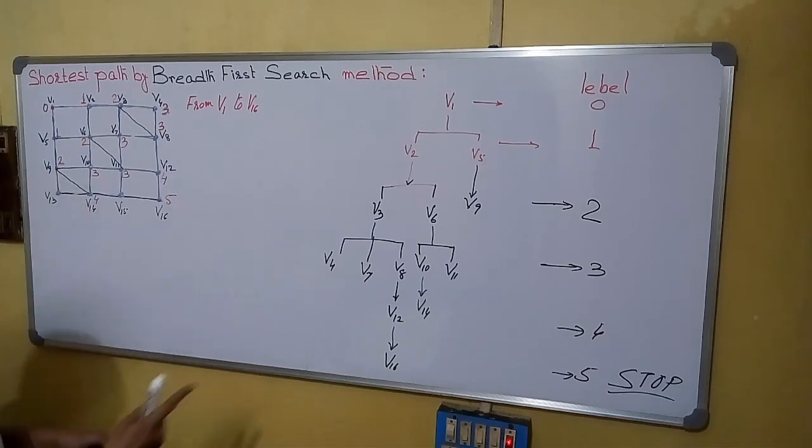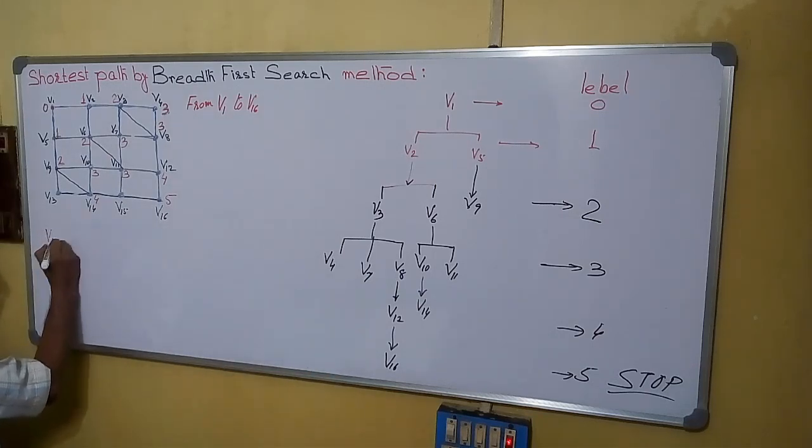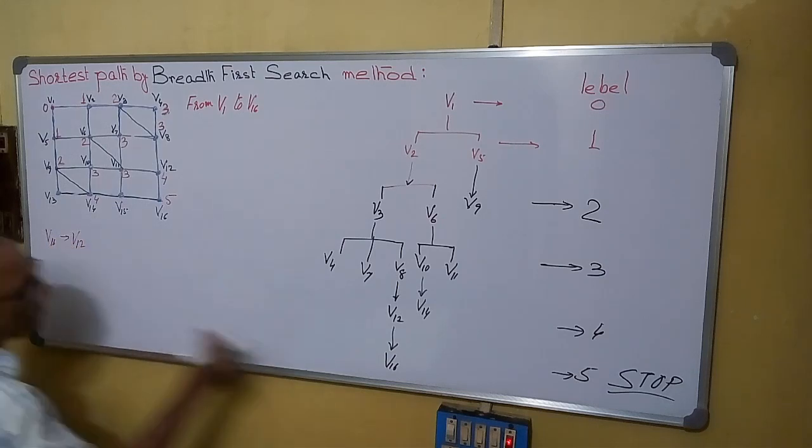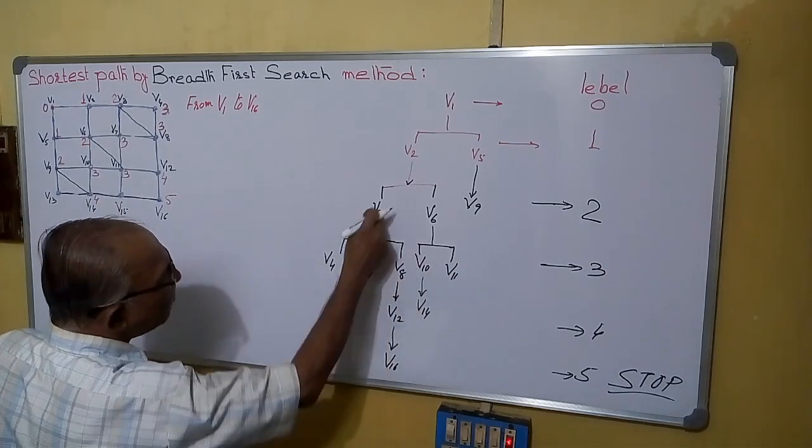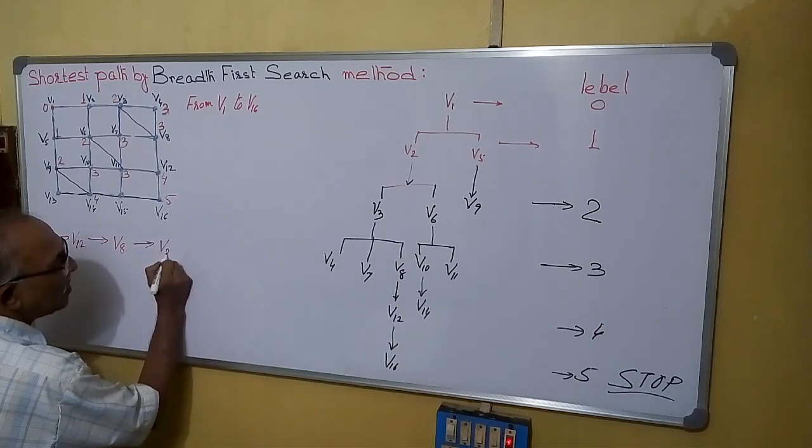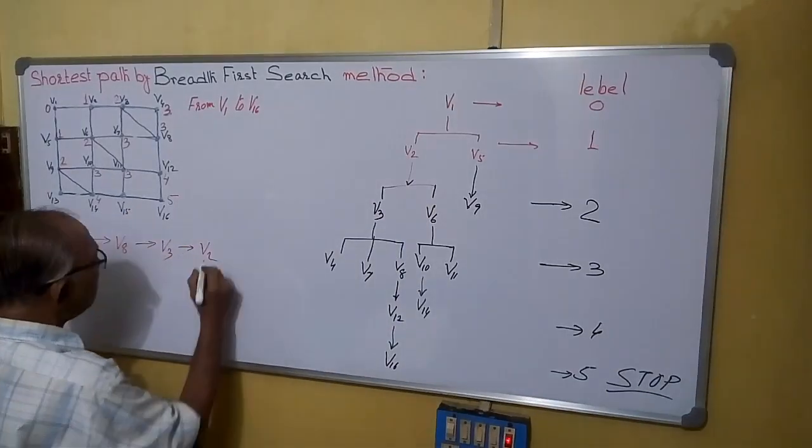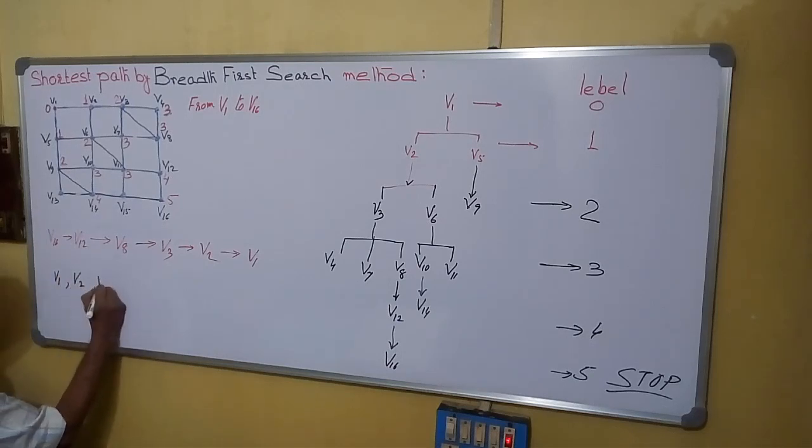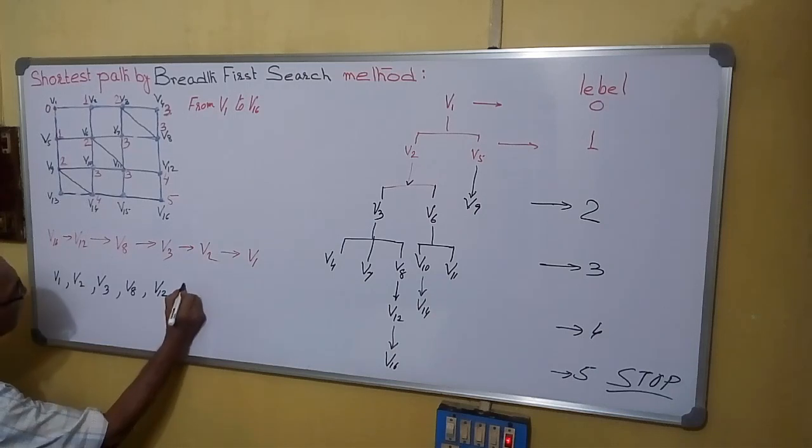Now for finding that path we will retrace from backward. See here from here we can say V16. From 16 to 12, V12. Then from 12 to 8. From 8. From 8 is coming from 3. 3 is coming from 2. V2. V2 is coming from V1. So our final path is we can say V1, V2, V3, V8, V12, V16.